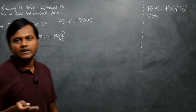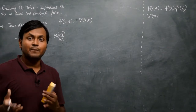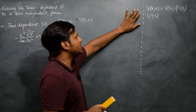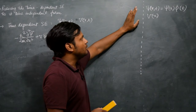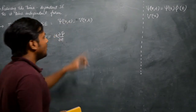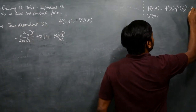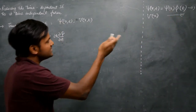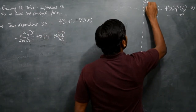For example, a gravitational field or an electrostatic field — if a particle is experiencing fields like that, which are independent of time, the wave function solution can usually be written as a product of two separate functions of independent variables. This is known as the separation of variables method.